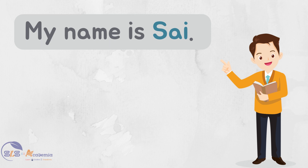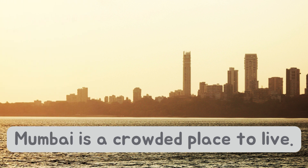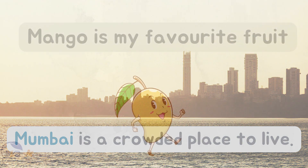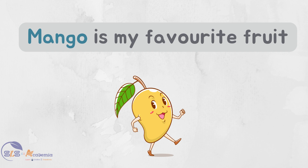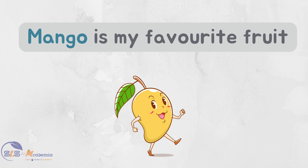In the sentence 'Mumbai is a crowded place to live,' the word Mumbai is a noun because it is a naming word. Mumbai is a name of a specific city, so Mumbai is an example of a proper noun — observe that I have used capital M for Mumbai. Remember that all proper nouns should start with a capital letter. In the sentence 'Mango is my favorite fruit,' the word Mango seems to be a proper noun but words like Mango and Potato are common nouns unless a specific variety is mentioned, like Alphonso Mango or Russian Potato.